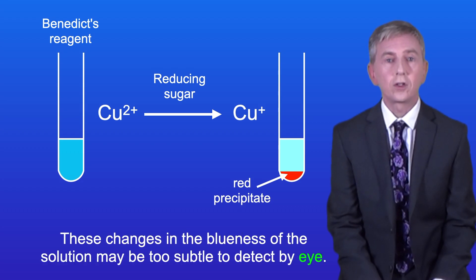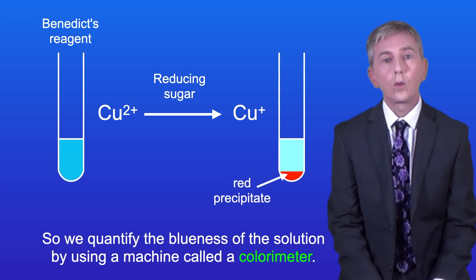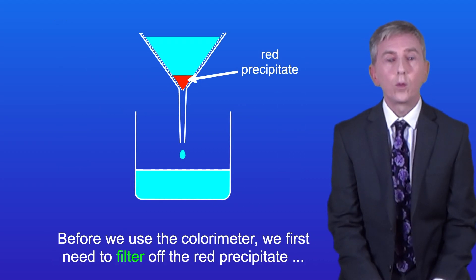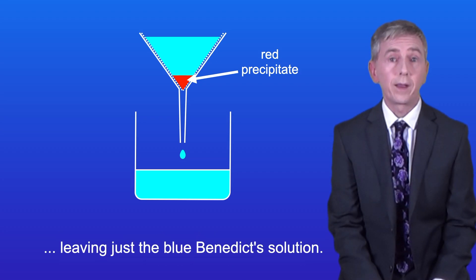Now these changes in the blueness of the solution may be too subtle to detect by eye. So we quantify the blueness of the solution by using a machine called a colorimeter. Before we use the colorimeter, we first need to filter off the red precipitate, leaving just the blue Benedict's solution.